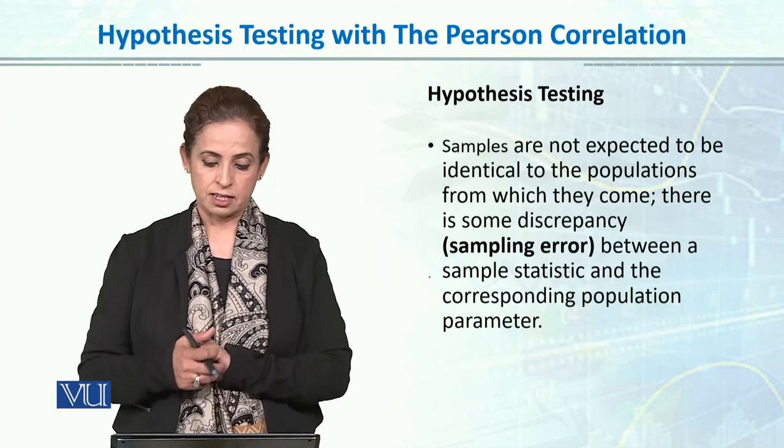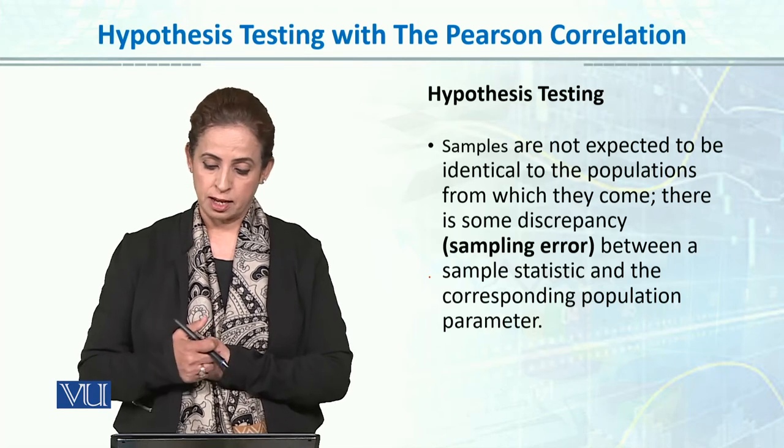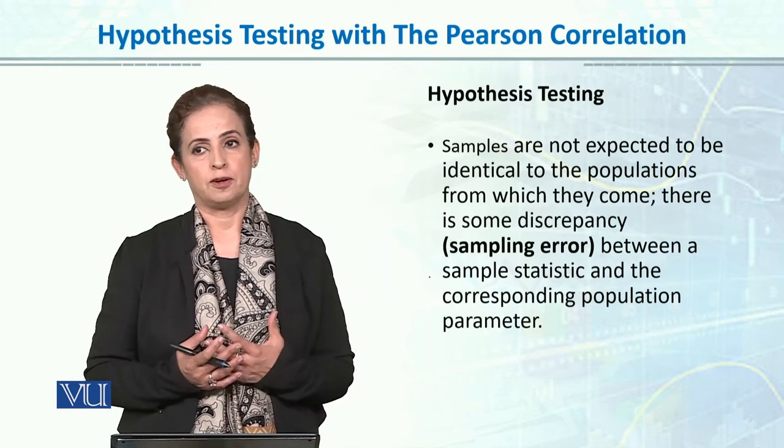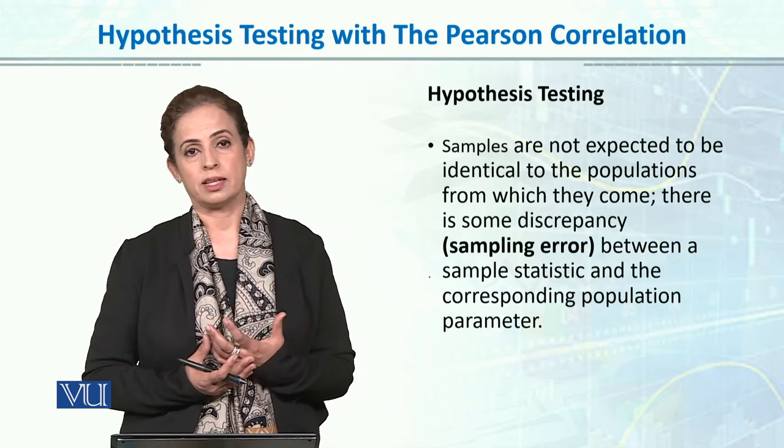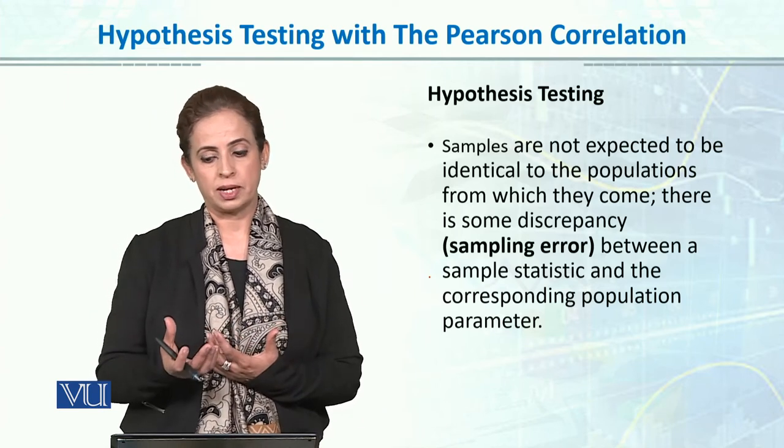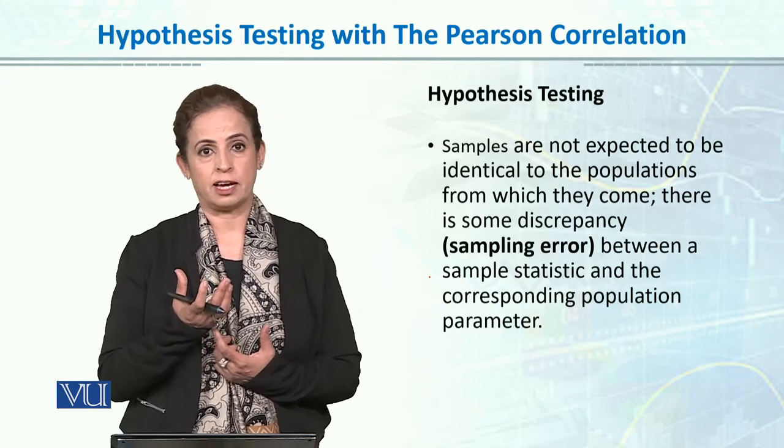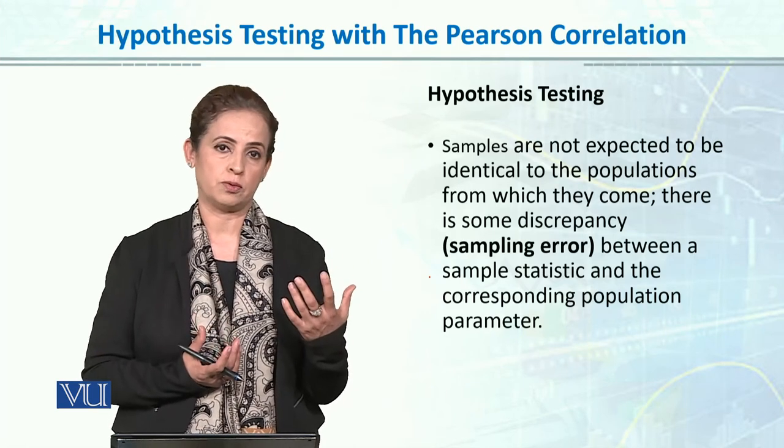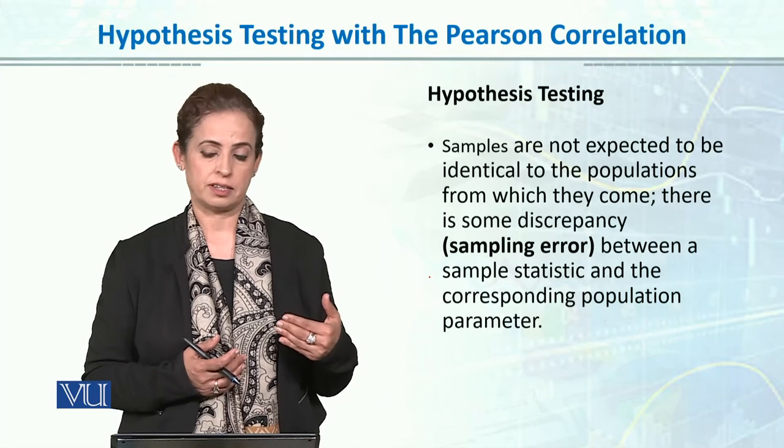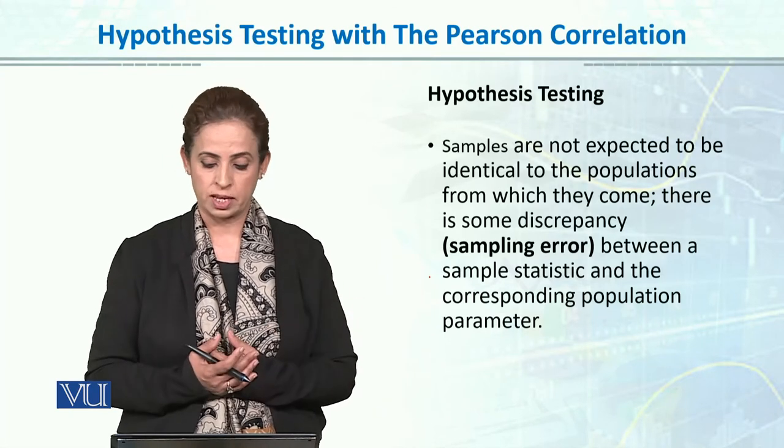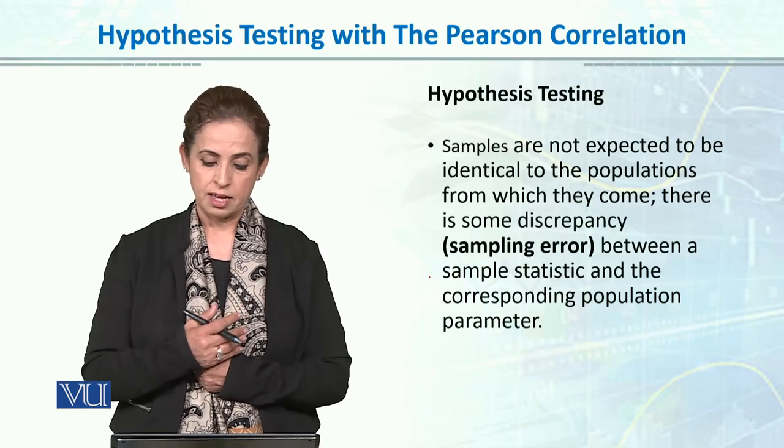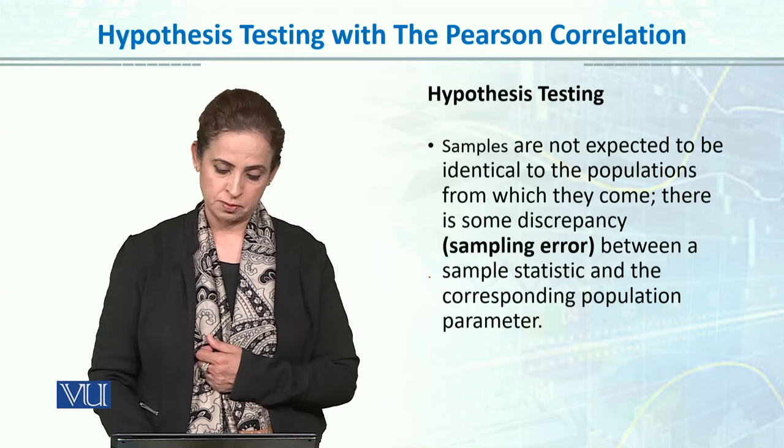Samples are not expected to be identical to the population from which they come. There is some discrepancy or sampling error. The difference or discrepancy between our sample statistic and the corresponding population parameter is known as sampling error.